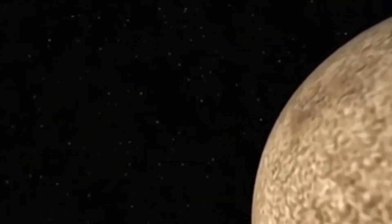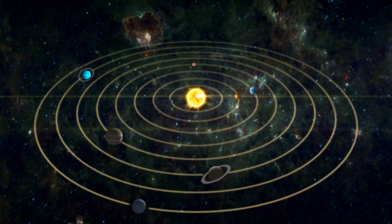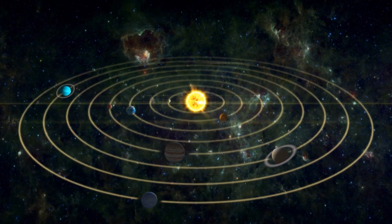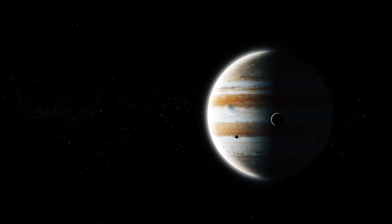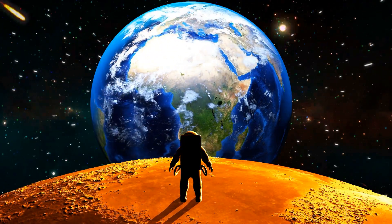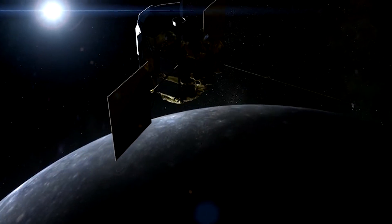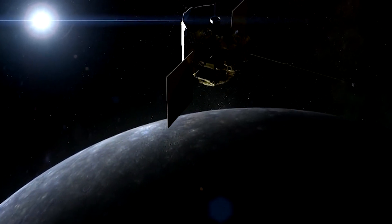The idea of ice on Mercury might initially seem counterintuitive, considering its proximity to the searing heat of the sun. However, Mercury's unique characteristics explain this phenomenon. Unlike Earth, Mercury has a minimal axial tilt, resulting in its polar regions receiving very little direct sunlight.